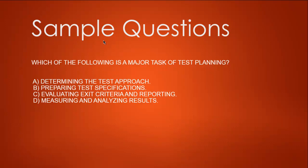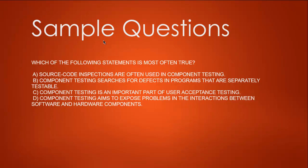Option C - evaluating exit criteria and reporting - is also closer, and option D - measuring and analyzing results - is not part of test planning. So B and D are not the answer. Options A and C remain: A says determine the test approach, C says evaluate exit criteria and report. For the planning phase our focus is on the approach for tests and how they should be conducted, so the answer is A.